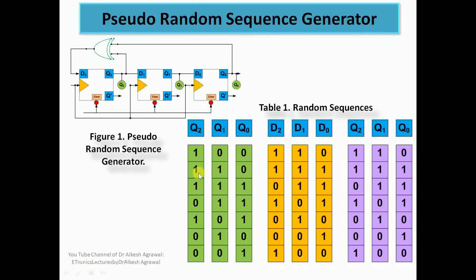Again, the XOR of Q2=1 and Q0=0 gives 1, which goes to D2. So before the clock the input conditions are 111, and after the clock the next state is 111. From 110 we have 111.